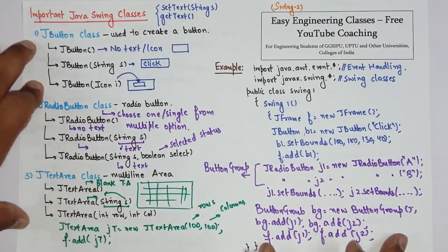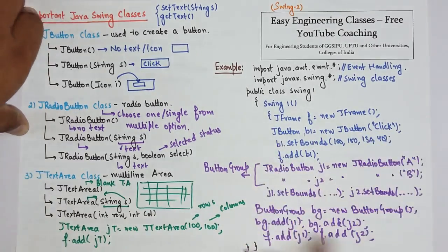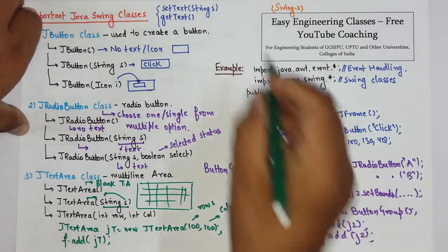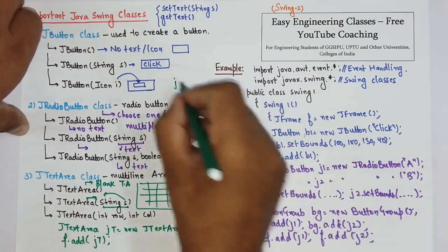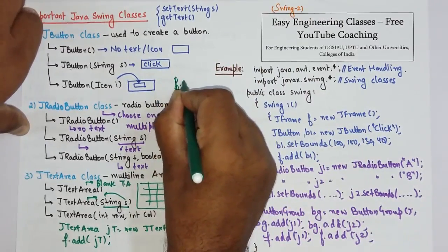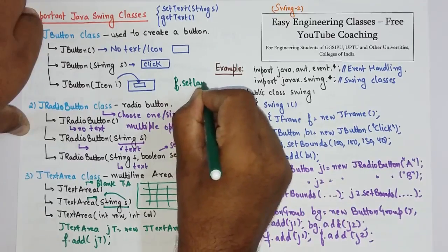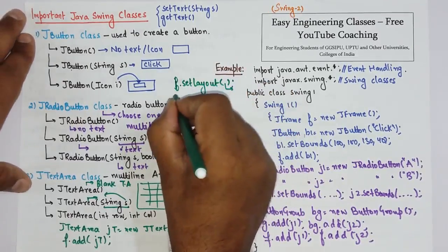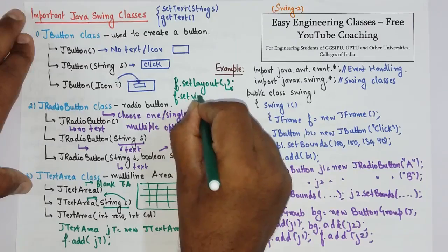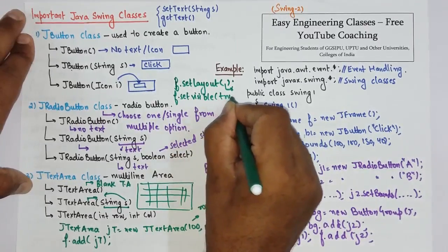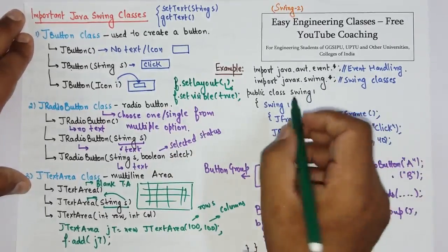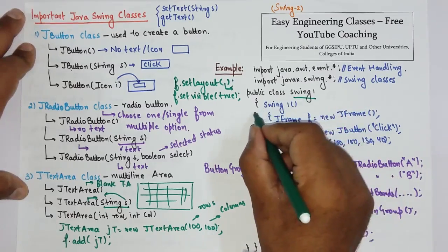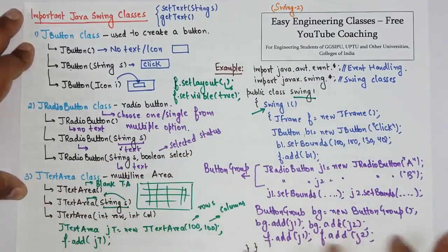That is how you can create a Swing application. And this code we have to do: setLayout, setVisible. So you have to use frame for this, so f.setLayout, whatever layout you have to set, pass here. Then f.setVisible true. Then create an object of this class. So by creating this object the Swing constructor will call and entire code will run.